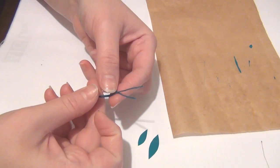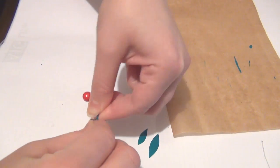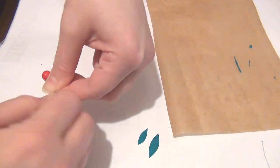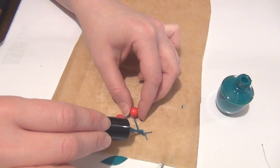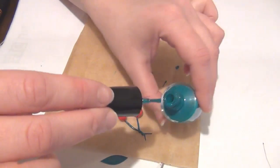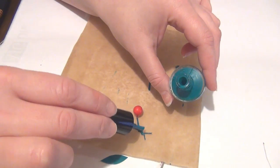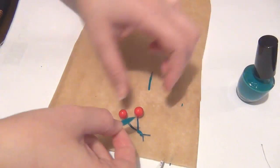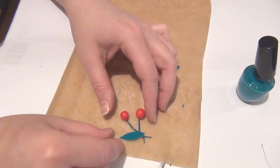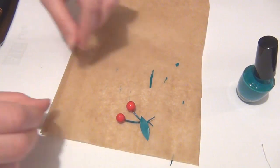Next trim the excess wire from the holly berries and twist the ends together. Once I've done that I just went ahead and added some more of that nail polish onto the wire and then I placed my leaf over top and allowed that to dry and that basically just glues that together. And that is your little cherry complete.